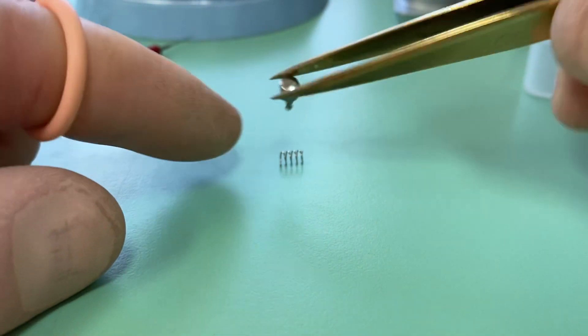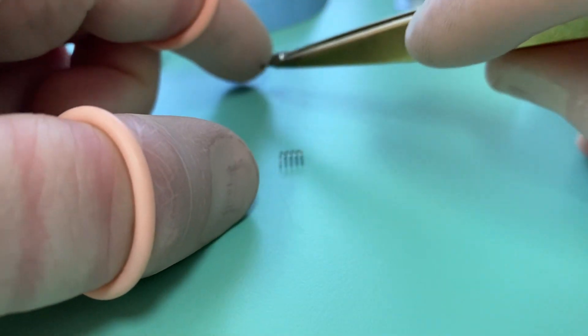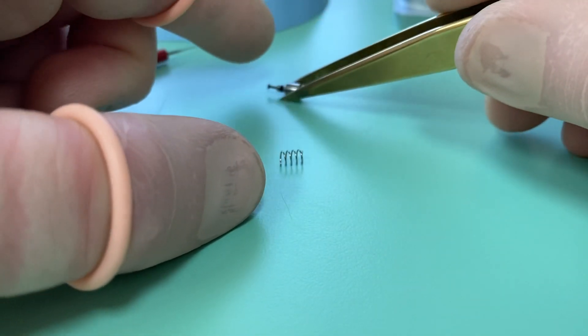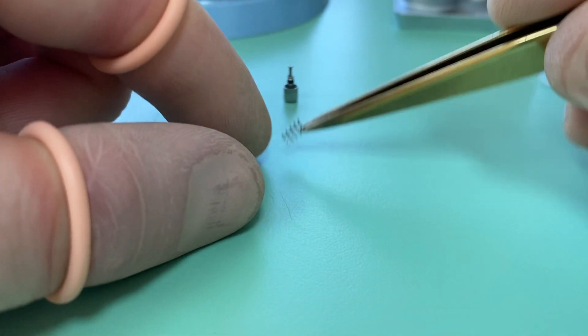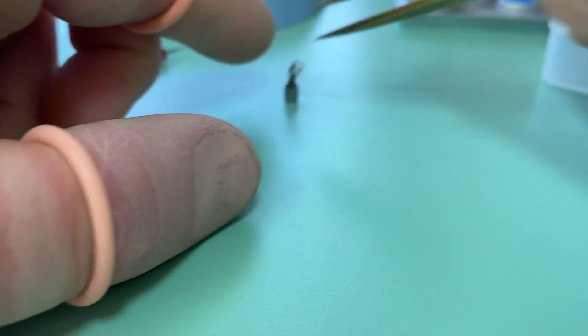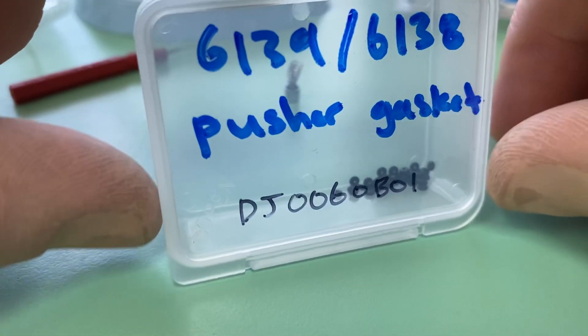So what we need to do is we need to replace these gaskets. Now a lot of people that aren't familiar with vintage Seikos just put a standard O-ring gasket in there, and they don't put the right size in. But they actually require a specific type of gasket.